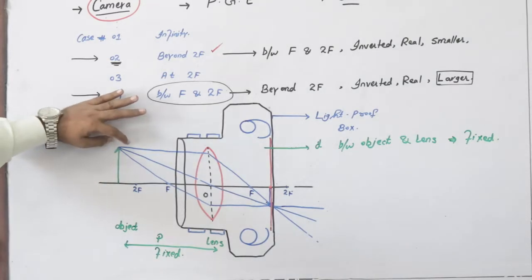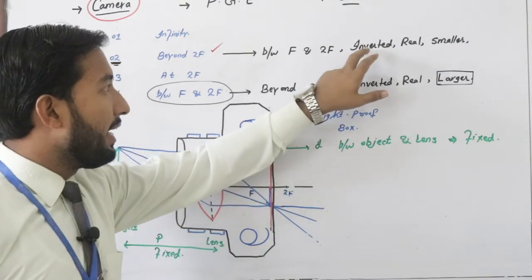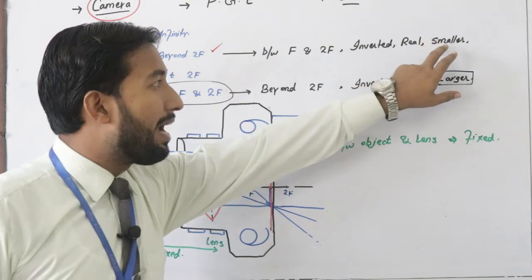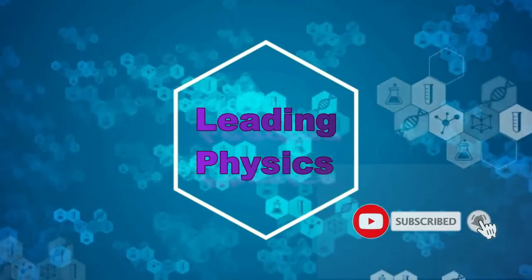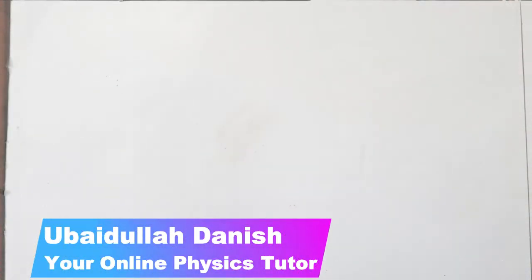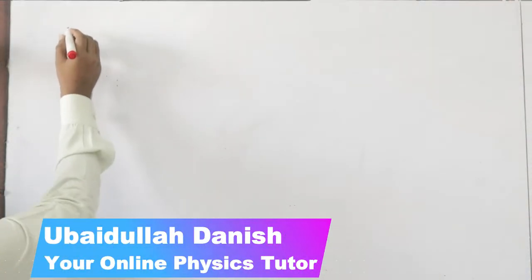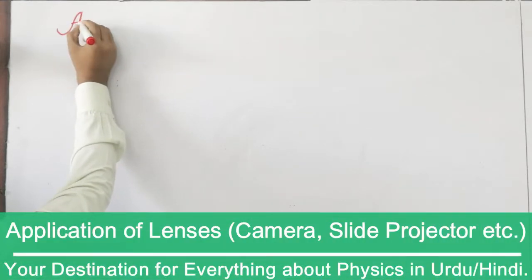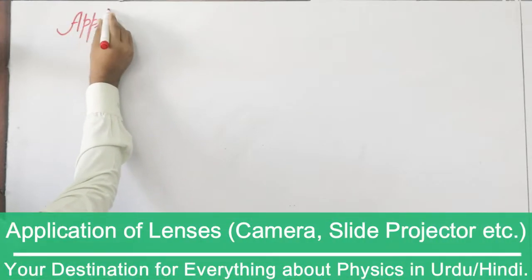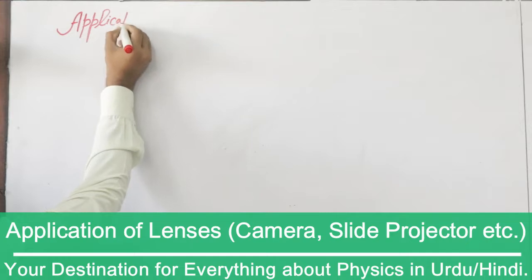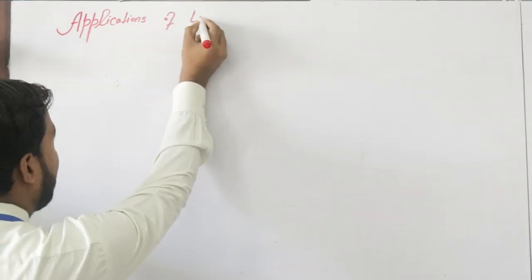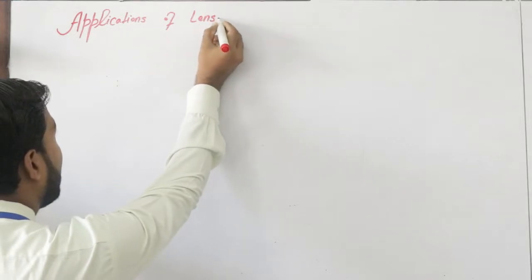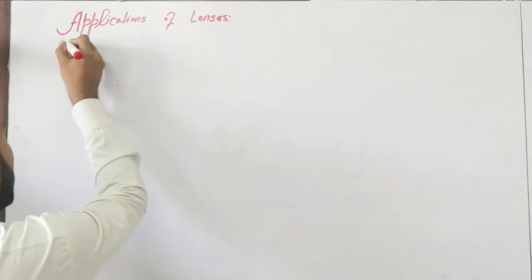In this case, object is placed beyond 2F. Here inverted, real and smaller images form. Today's article is Applications of Lenses. There are three applications of lenses we have to read.